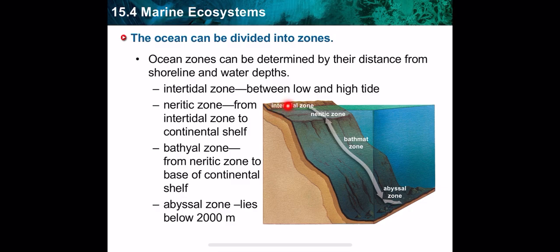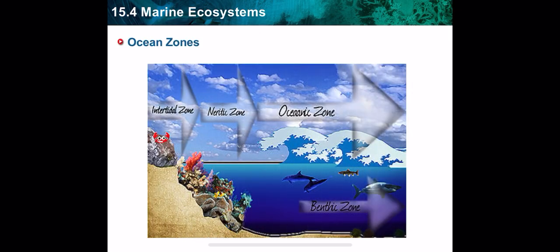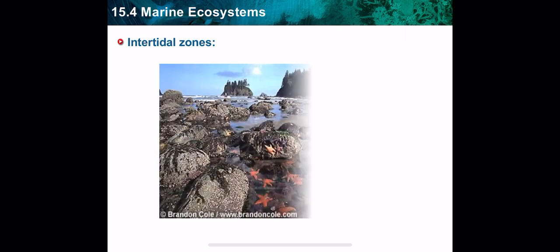Starting from the end of the intertidal zone to the continental shelf, it's the neuritic zone. The intertidal zone and neuritic zone are both in the coastal ocean. After coastal ocean comes the open ocean, which is composed of two main zones: the bathyal zone, from the neuritic zone to the base of the continental shelf, and the abyssal zone, from 2000 meters down to the ocean floor.